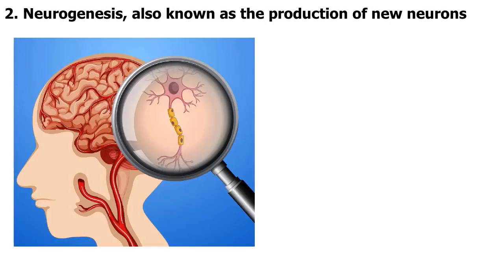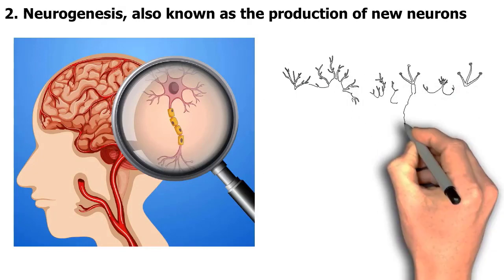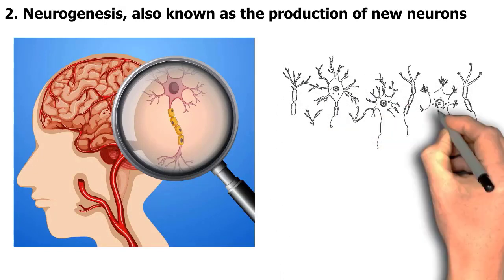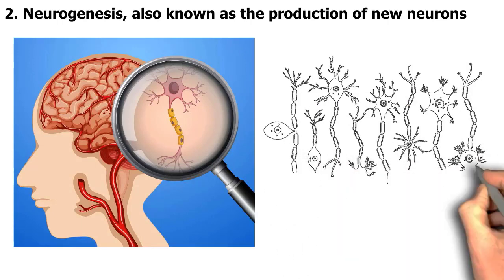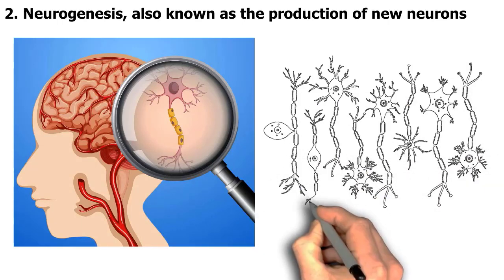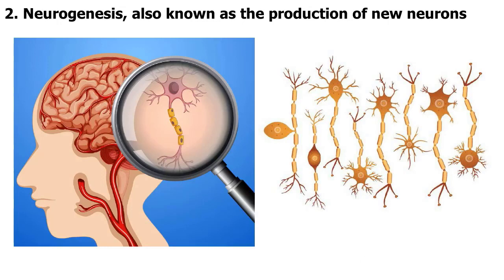Exercise and environmental enrichment are two examples of cognitive therapy that can be effective. The reason why some forms of cognitive treatment, including exercise and environmental enrichment, can be successful in promoting brain health is due to the brain's capacity to generate new neurons.